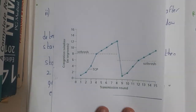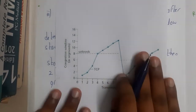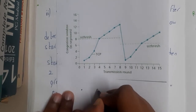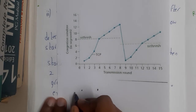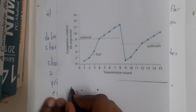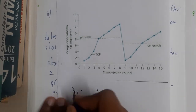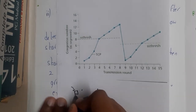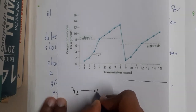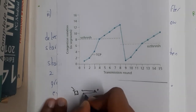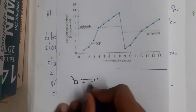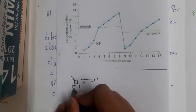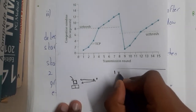So slow start will look like this in the diagram. Basically when one device wants to send data to another device, initially it will send a single segment or single packet. Once the receiver sends back an acknowledgement saying it received the first packet, the sender will then send two packets — it doubles its speed, moving from one to two.